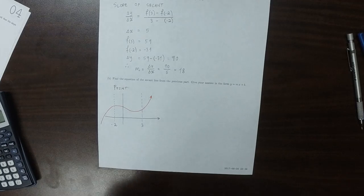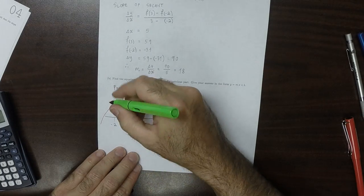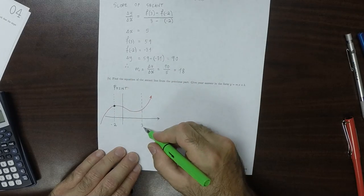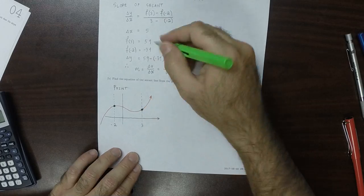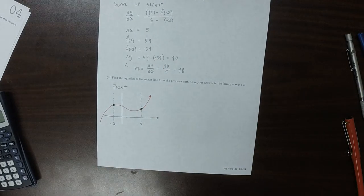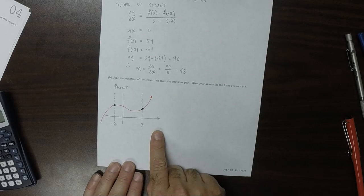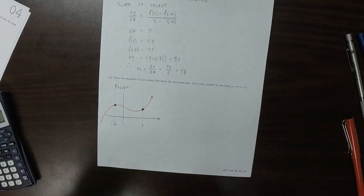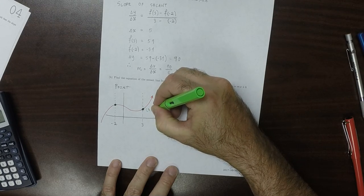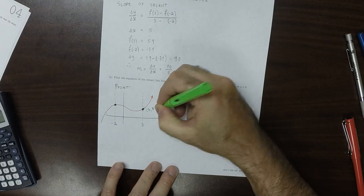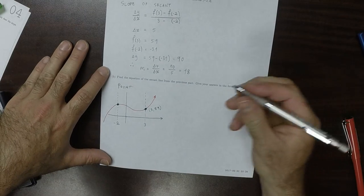And in part a above we already plugged in negative 2 to find this value and we already plugged in 3 to find this value, so that's not to scale. So we already have two points. I guess I'll use this one, so we know from above that this is the point (3, 59).